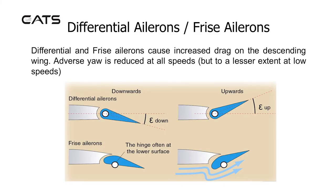Differential Ailerons and Freeze Ailerons. Differential and freeze ailerons cause increased drag on the descending wing. Adverse yaw is reduced at all speeds, but to a lesser extent at low speeds.